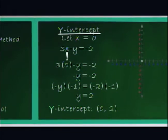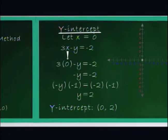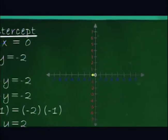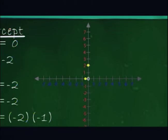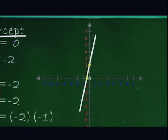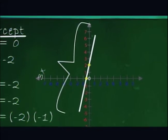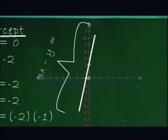We finally have two points which correspond to the x and y-intercepts: negative 2 thirds, 0, and 0, 2. By connecting these points, we are able to graph the linear equation 3x minus y equals negative 2.